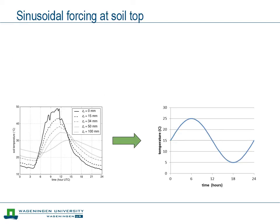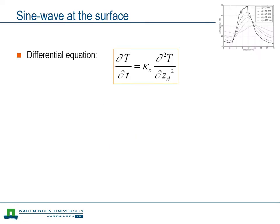Before we can focus on determining the soil thermal diffusivity from observations, we first have to go back a little to the theory we developed in one of the earlier videos. The starting point is that we assume the temperature varies more or less as a sine function at the top of the soil. We started with the differential equation — the diffusion equation — that links the time rate of change of temperature with the vertical second derivative of temperature.